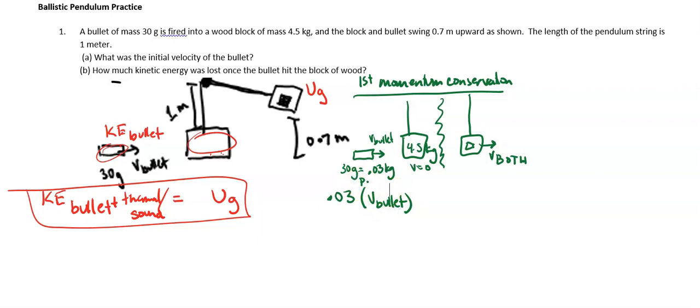And again, this is the momentum of the bullet plus momentum of the block equals together. They are together afterwards, so momentum of both. Velocity of both plus 4.5 times 0 equals together. They all have a mass of 4.53 times velocity of both. So this is our very important momentum conservation equation.